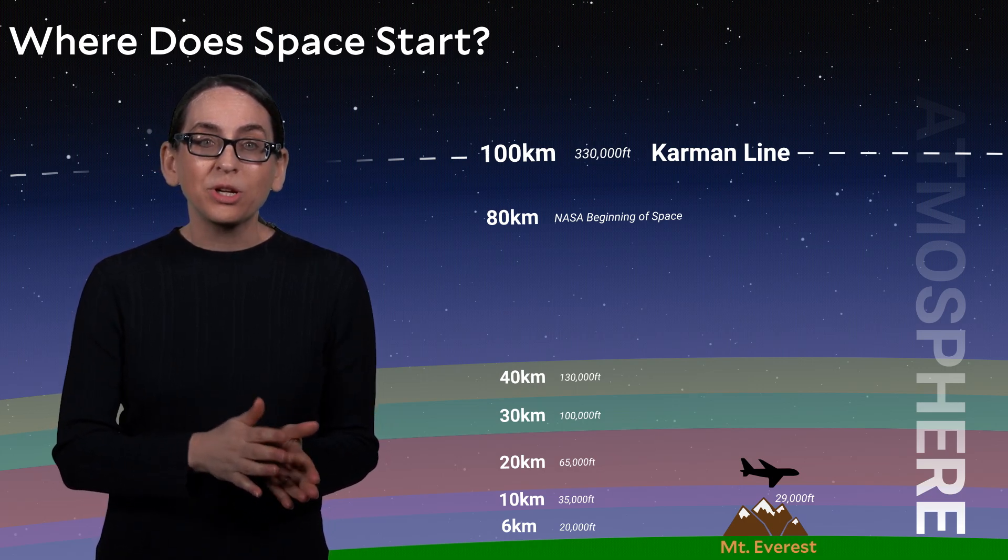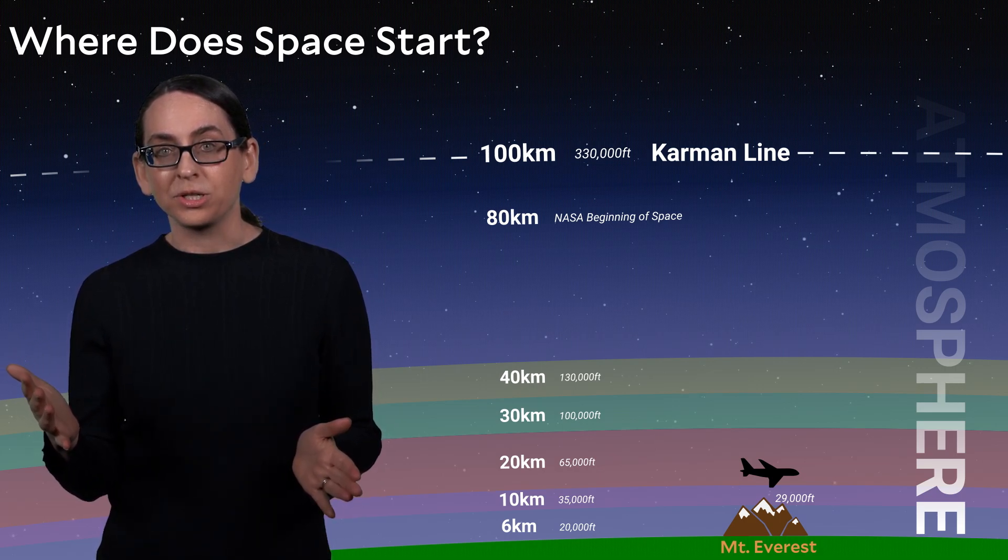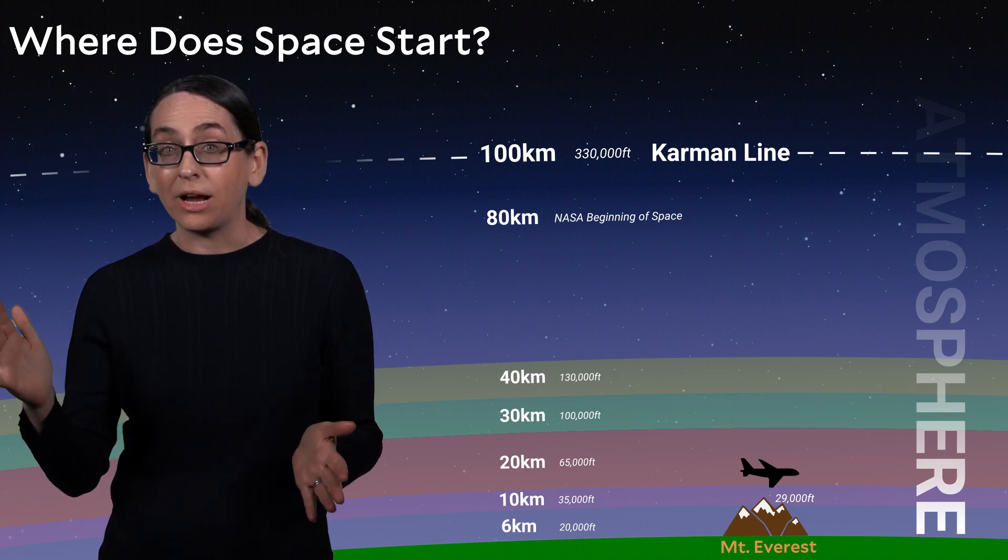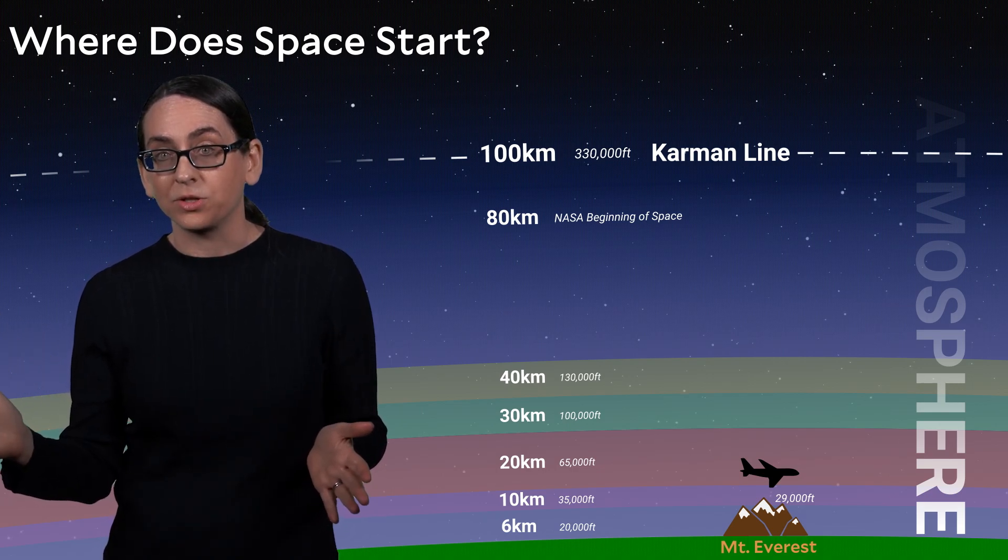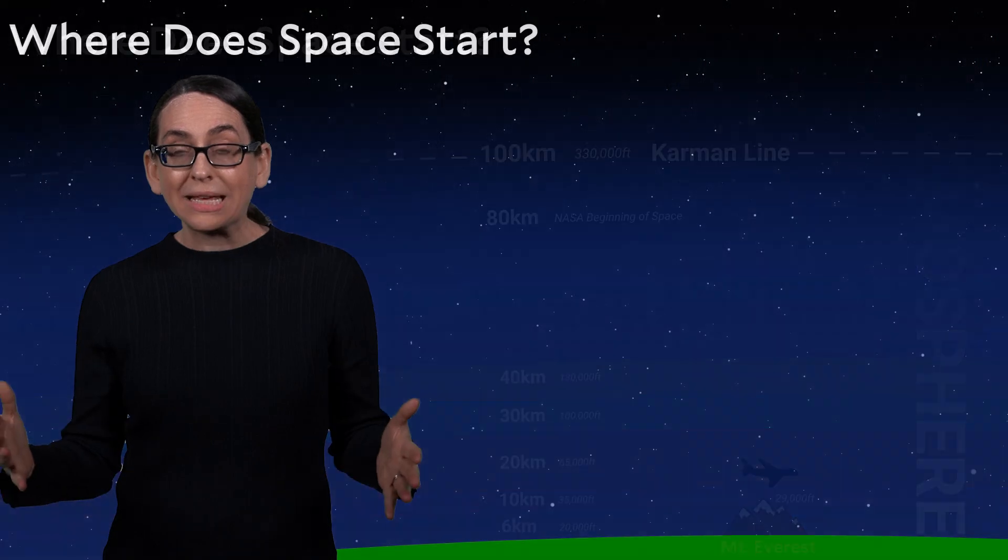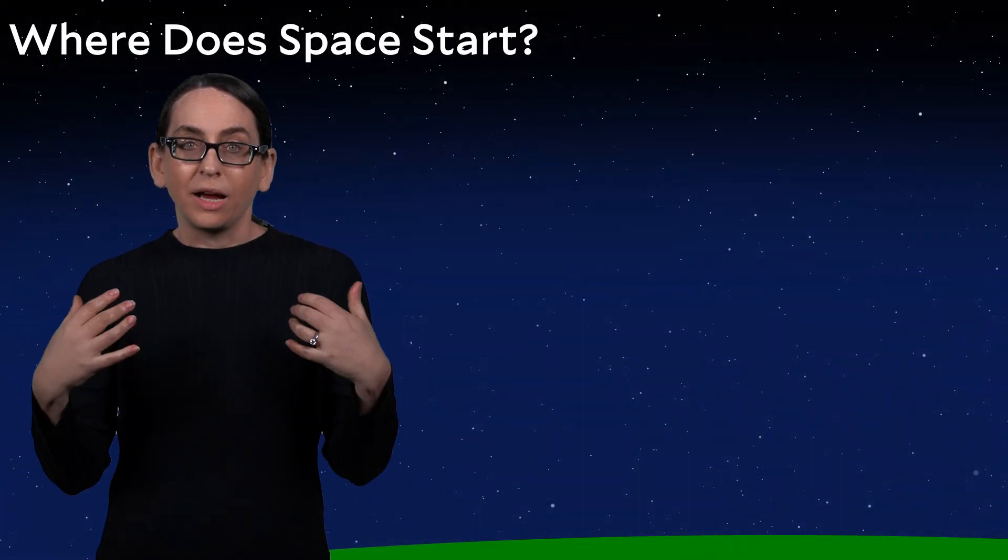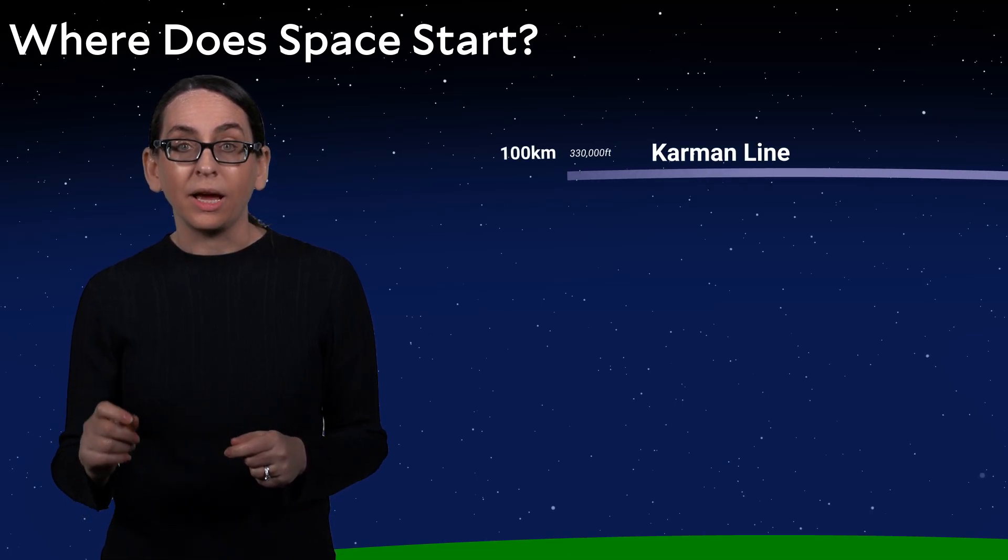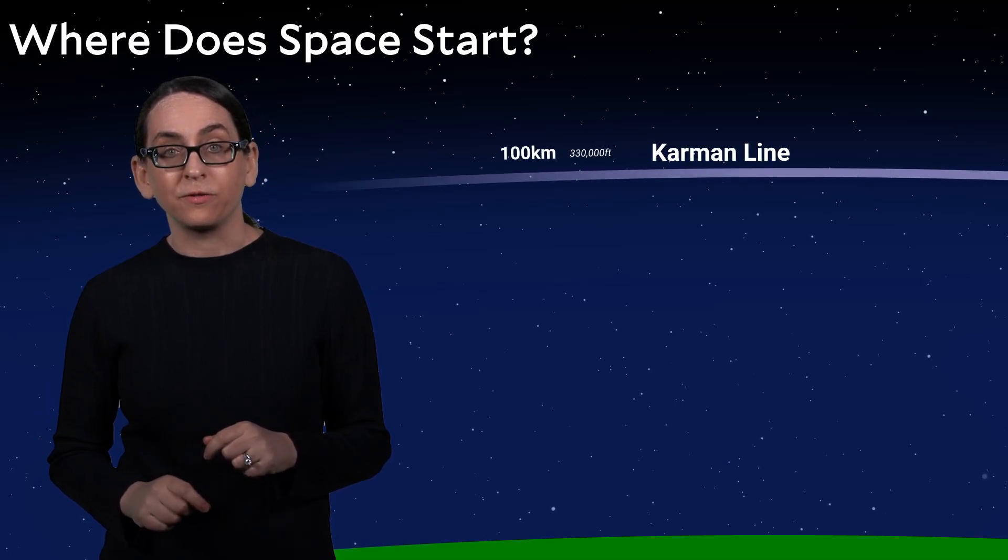So as we go higher than this arbitrary line of 100 kilometers, it's not that the atmosphere stops. There are tiny traces of atmosphere out to 1000 kilometers above the Earth's surface. Nonetheless, there are many satellites that orbit in this region. I started this segment asking, where does space start? And we've decided that space starts at the Karman line at 100 kilometers above the Earth's surface.